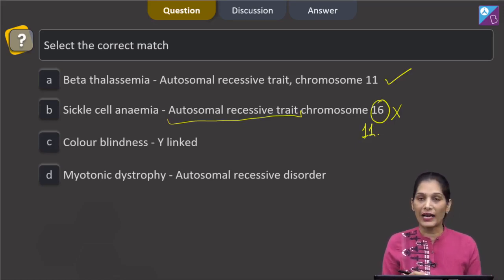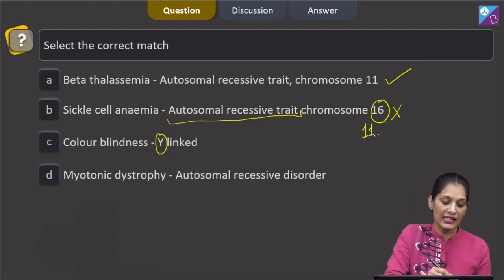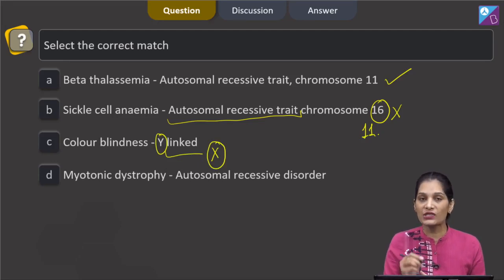C: colour blindness, Y-linked? No. Colour blindness is the sex linked recessive disorder. So we can say this is X-linked recessive disorder. It is not Y-linked because Y-linked traits are called the holandric traits and colour blindness is not the holandric trait.